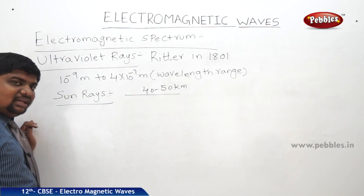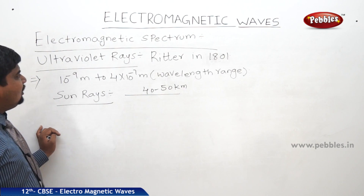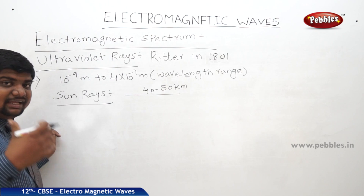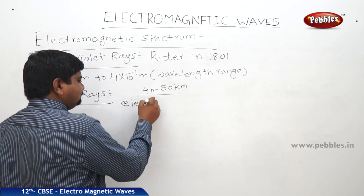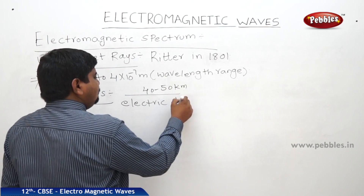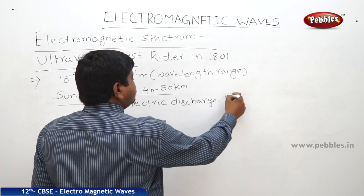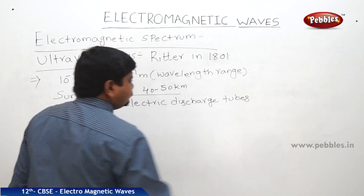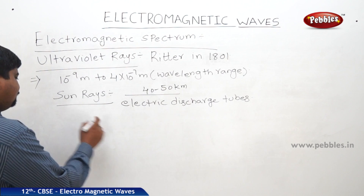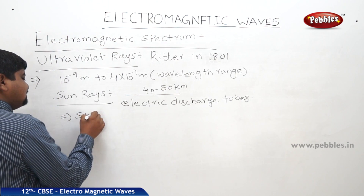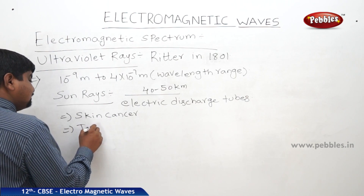That is some information about ultraviolet rays. The ways we can produce ultraviolet rays artificially in a lab are through electric discharge tubes. If these ultraviolet rays fall on the skin of human beings, they cause skin cancer and tanning of skin.